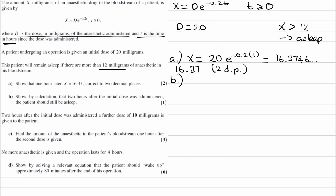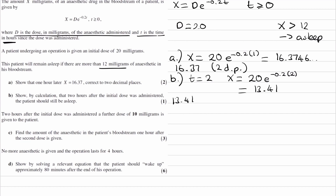Part B is also pretty straightforward: show by calculation that two hours after the initial dose is administered, the patient should still be asleep. So t is then just 2, we put that into our equation — 20 e to the power of minus 0.2 times 2 — and we end up with x being 13.41. 13.41 is bigger than 12, and therefore they are still asleep.